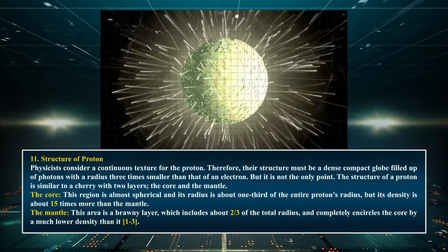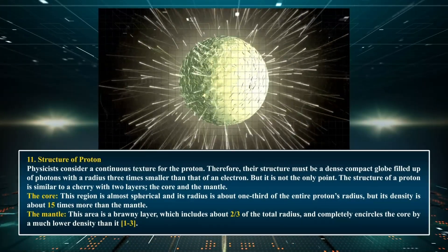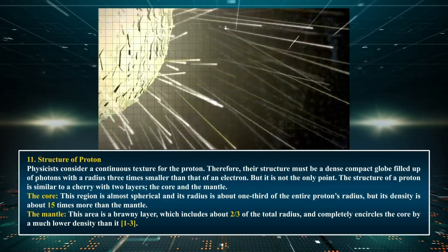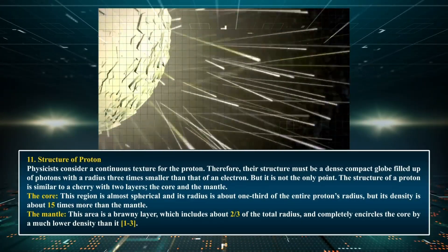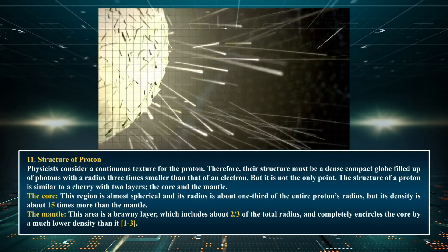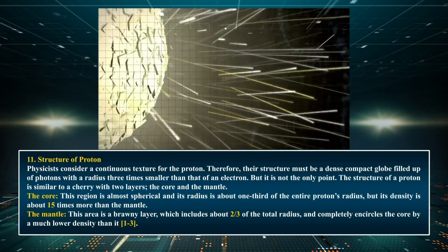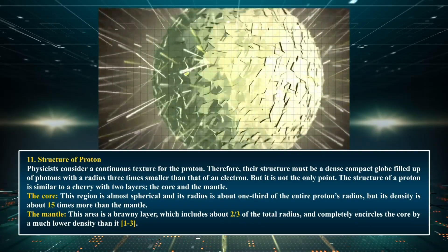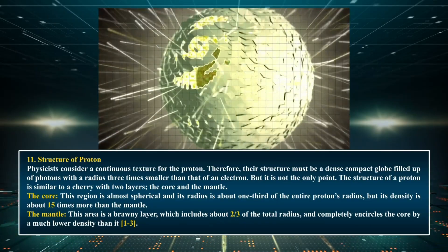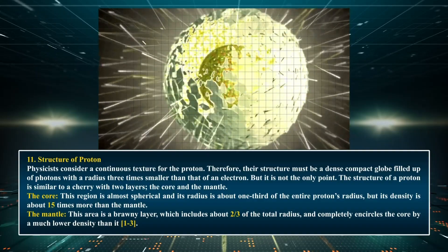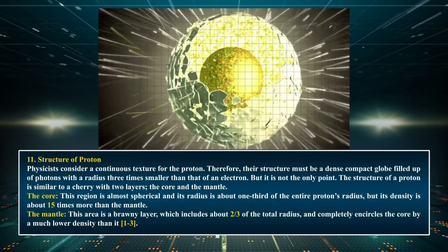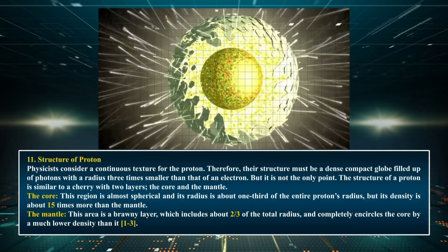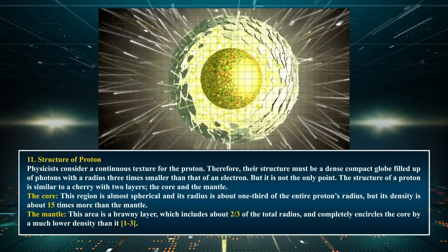Chapter 11: Structure of the Proton. Physicists consider a continuous texture for the proton. Therefore, their structure must be a dense compact globe filled up of photons, with a radius three times smaller than that of an electron. But it is not the only point.